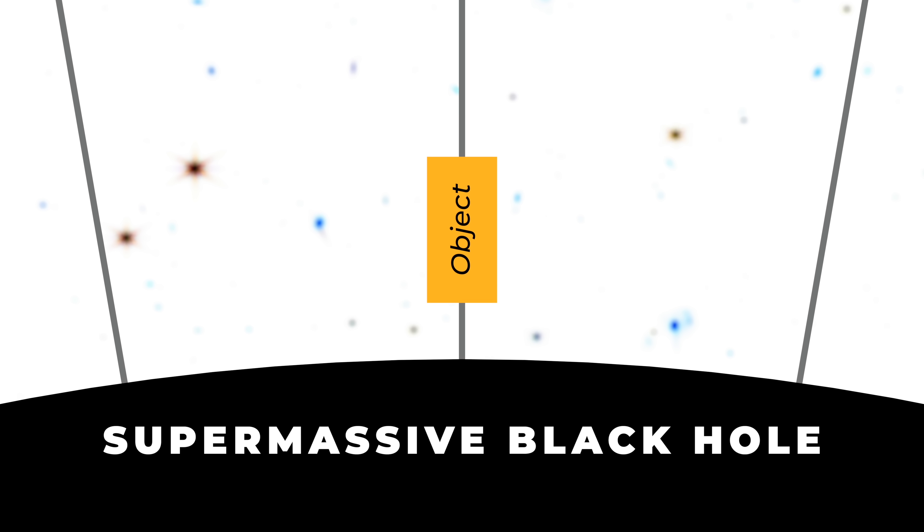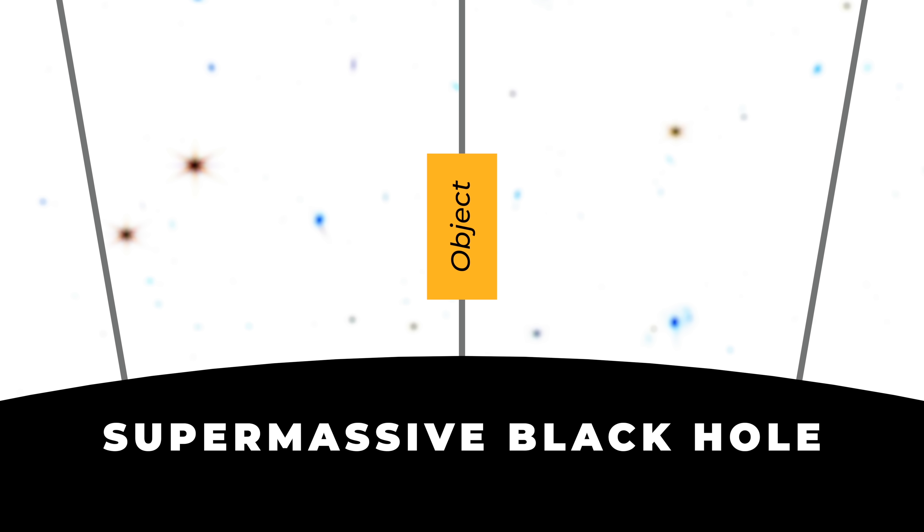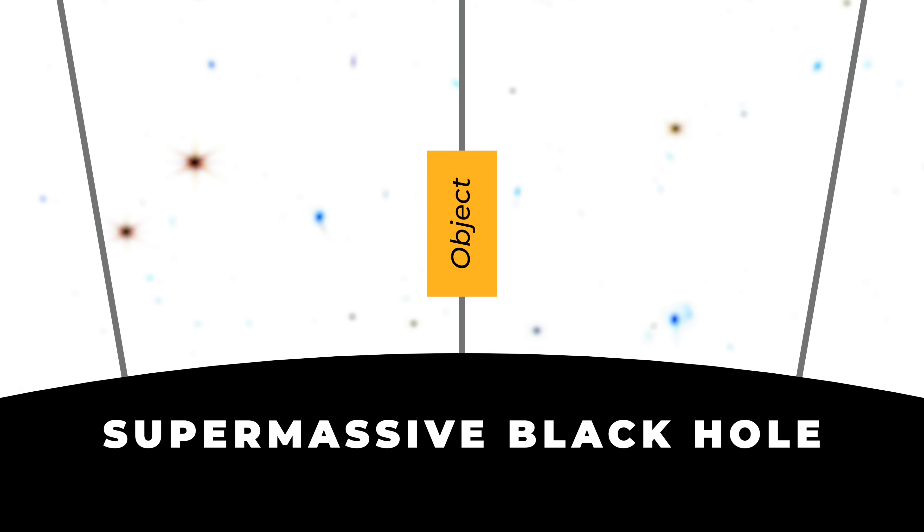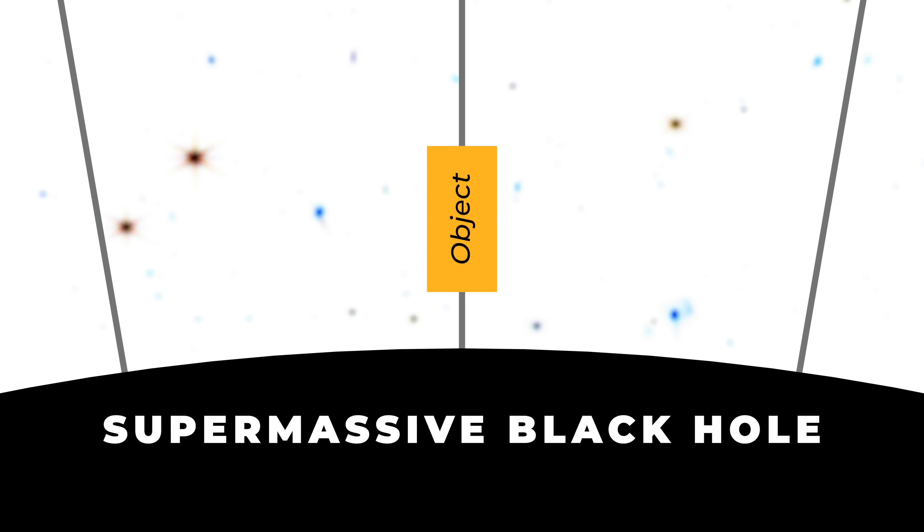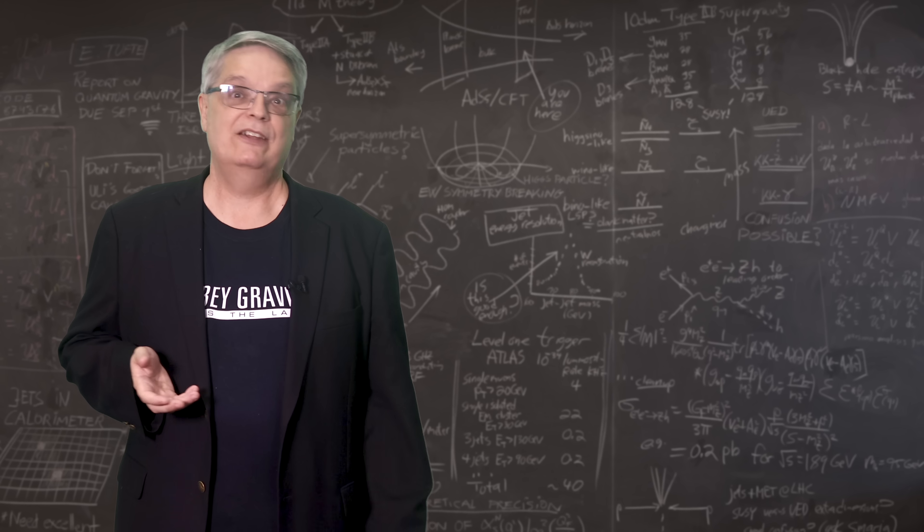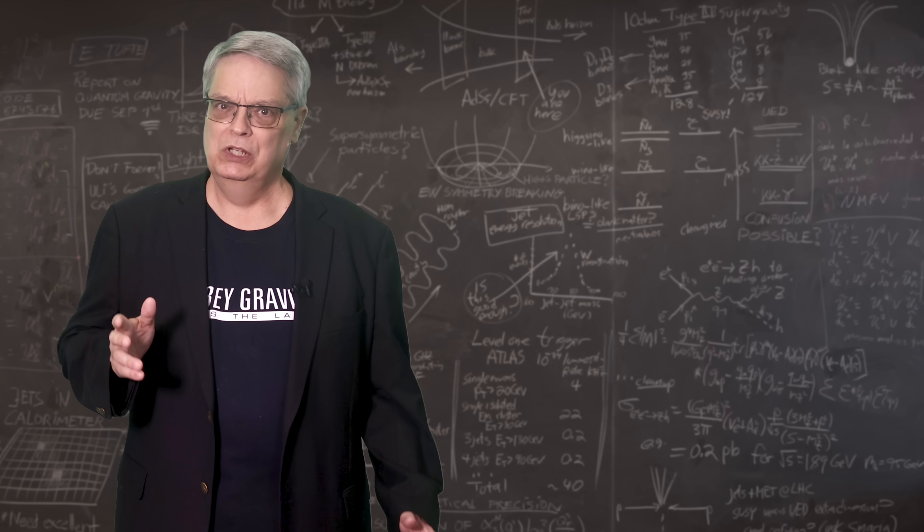So, for an object the size of a person falling into this supermassive black hole, the force on the head and feet aren't so different, and that means that you don't get torn apart, so no spaghettification if you're falling into a really big black hole.